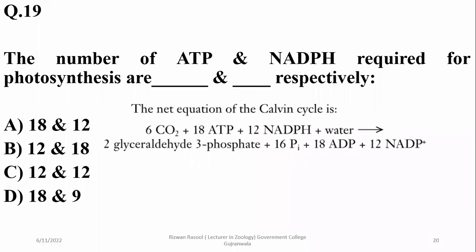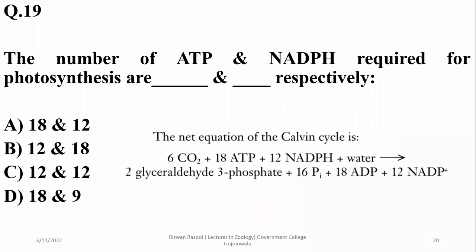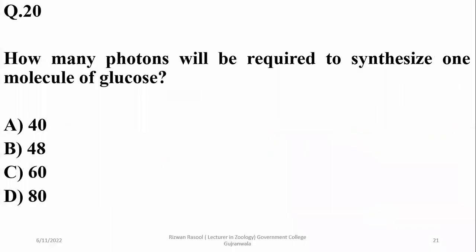Question nineteen: The total number of ATPs and NADPH required for photosynthesis are 18 and 12 respectively. As you know, 18 ATP and 12 NADPH are used for 6 CO₂ to form two glycerate-3-phosphate or one glucose. So alpha is the right option.